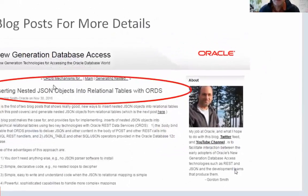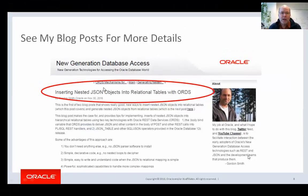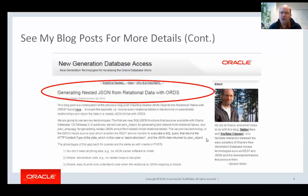If you want more details on how to do that, I've written a blog post called 'Inserting Nested JSON Objects into Relational Tables with ORDS.' It goes through the exact example I just showed you but with more details — showing the calls ORDS needs you to make to define this as a POST handler for the purchase order resource, and giving you other details. I also have another blog post that shows you the reverse — generating the nested JSON from the relational data — using the JSON_OBJECT and JSON_ARRAY_AGG functions.